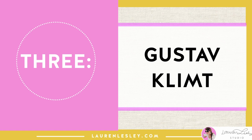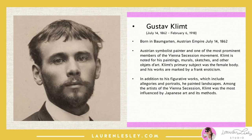Number three is Gustav Klimt — one of my favorites. Gustav Klimt was born in the Austrian Empire on July 14th, 1862. He was an Austrian symbolist painter and one of the most prominent members of the Vienna Secession movement. Klimt is noted for his paintings, murals, sketches, and other objects d'art. Klimt's primary subject was the female body, and his works are marked by a frank eroticism. In addition to figurative works, which include allegories and portraits, he painted landscapes. Among the artists of the Vienna Secession, Klimt was one of the most influenced by Japanese arts and its methods.